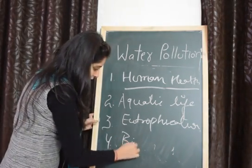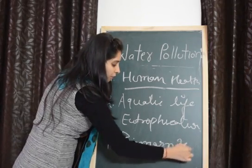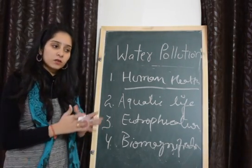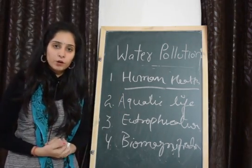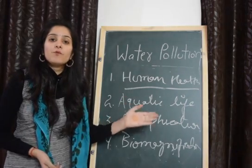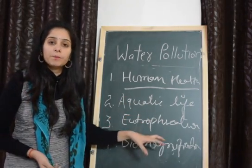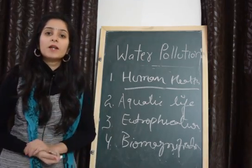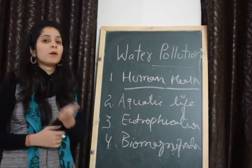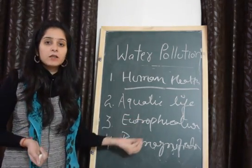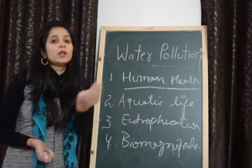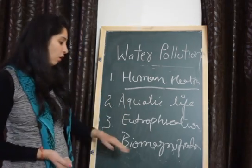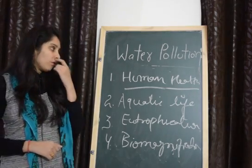Fourth is biomagnification. Sometimes some hazardous metals and harmful metals directly or indirectly transfer to the water bodies and they make a food chain. First they are used by the producers present in the water, then these plants are eaten by some zooplanktons, then zooplanktons are eaten by small fishes, and small fishes are eaten by large fishes. So these metals are transferred from the producer to the large fishes. The increase of hazardous metals from one animal to another animal is called biomagnification, which occurs due to water pollution.